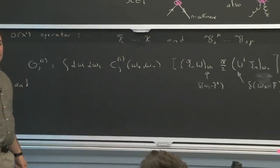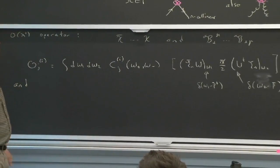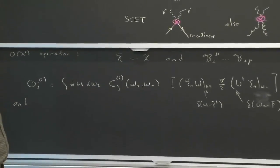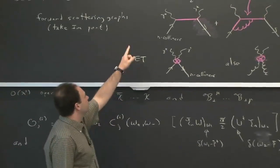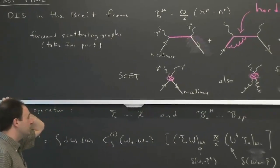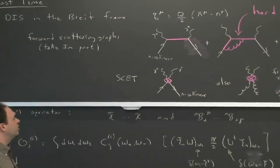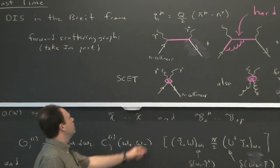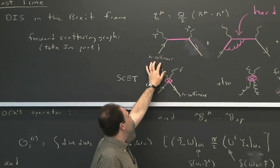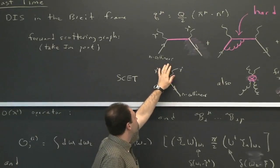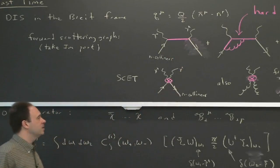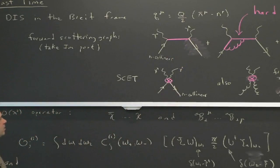And that process is DIS — that's the simplest process. So we started thinking about deep inelastic scattering in the Breit frame, which is this frame where Q of the photon has that form, just a component in the z direction. And in that frame, the incoming quarks in the proton — quarks and gluons — are collinear. An intermediate state, the out state, the x state that's going out is hard.